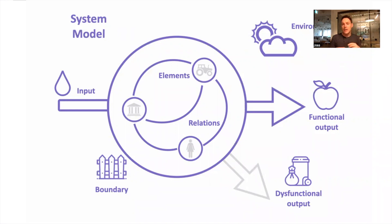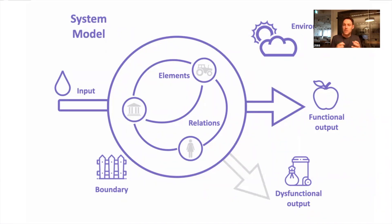The ratio between functional output and waste is essentially the efficiency of that system. The system then exists within an environment — the broader environment — which consists of the other systems and entities that it interacts with.